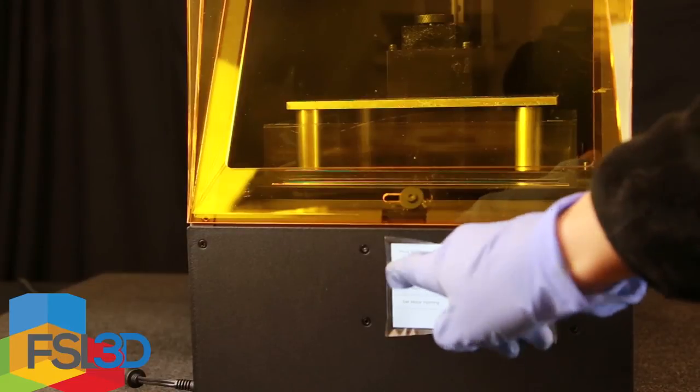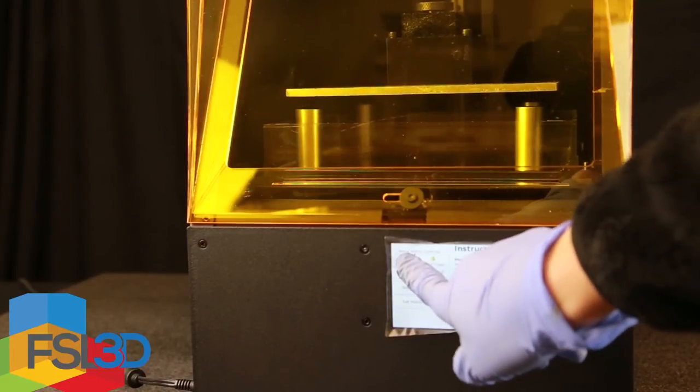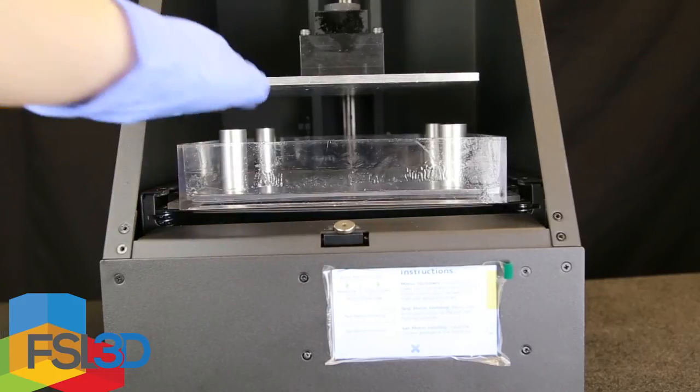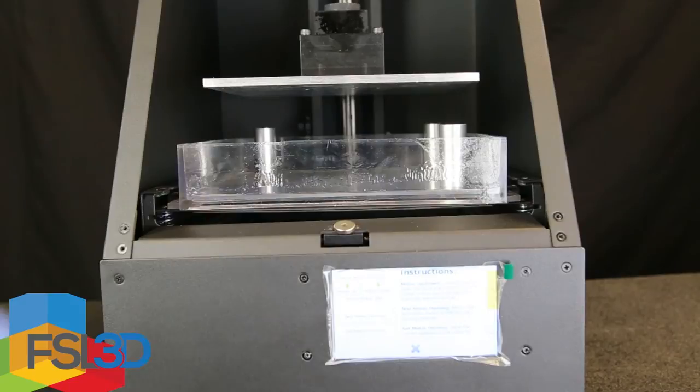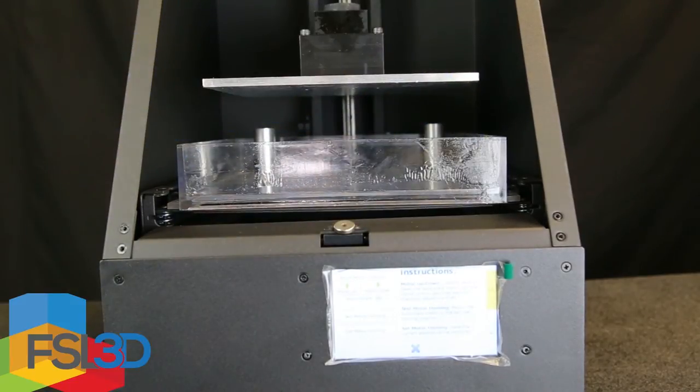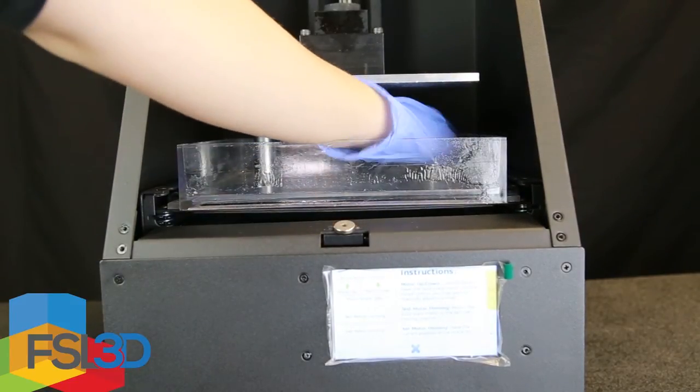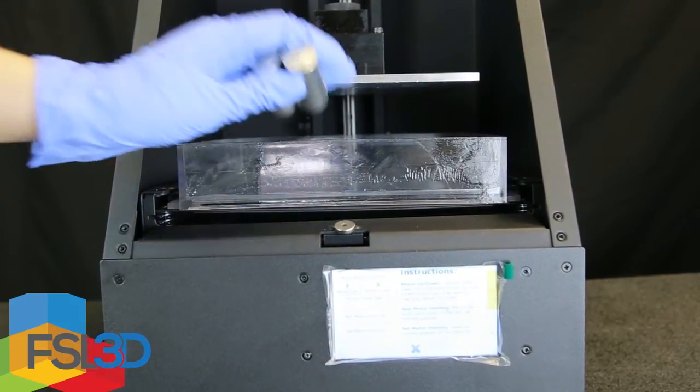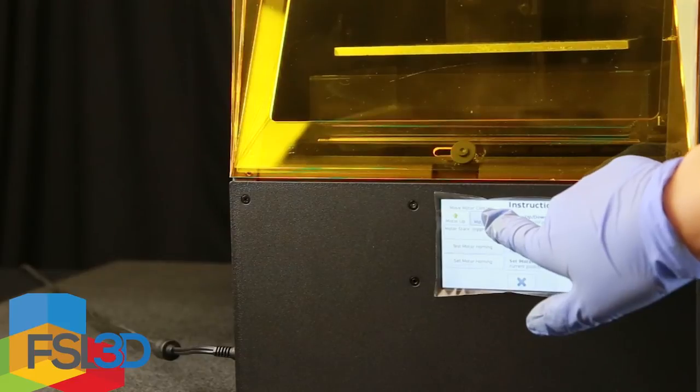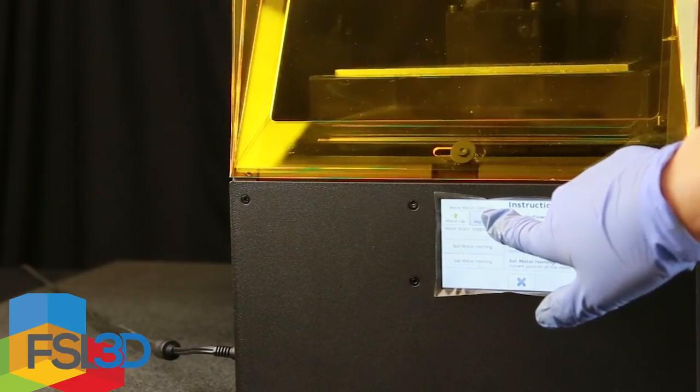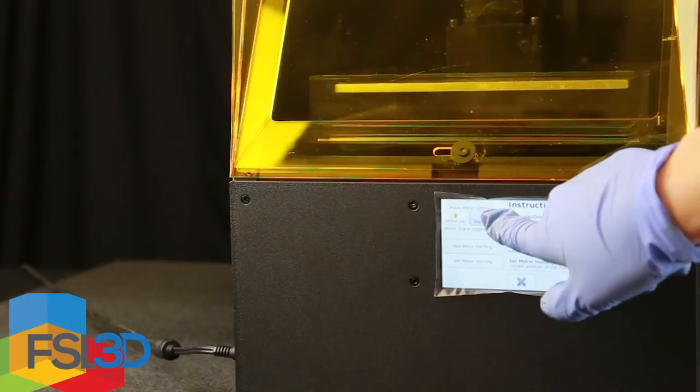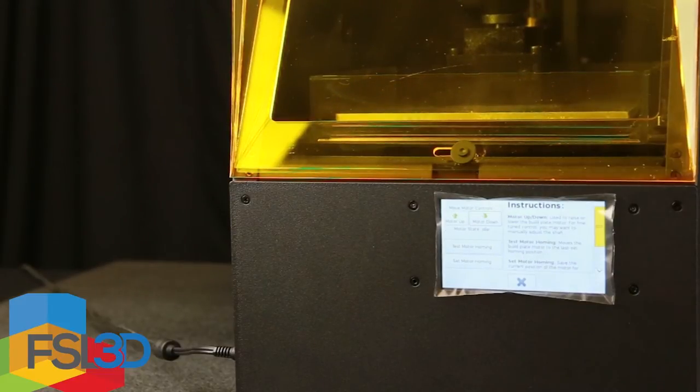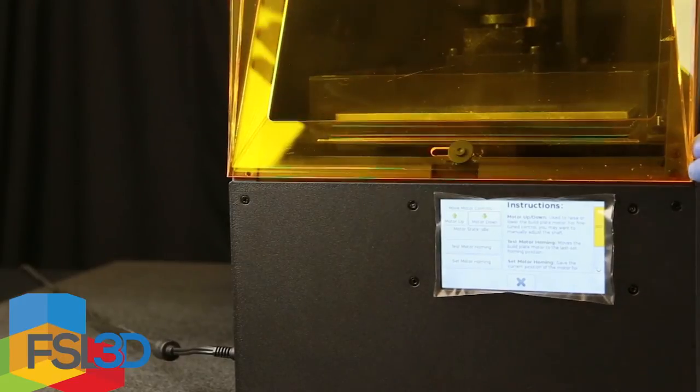Run the motor back up to remove the levelers. Bring the print head back down, stopping just above the vat. Complete the motion by hand.